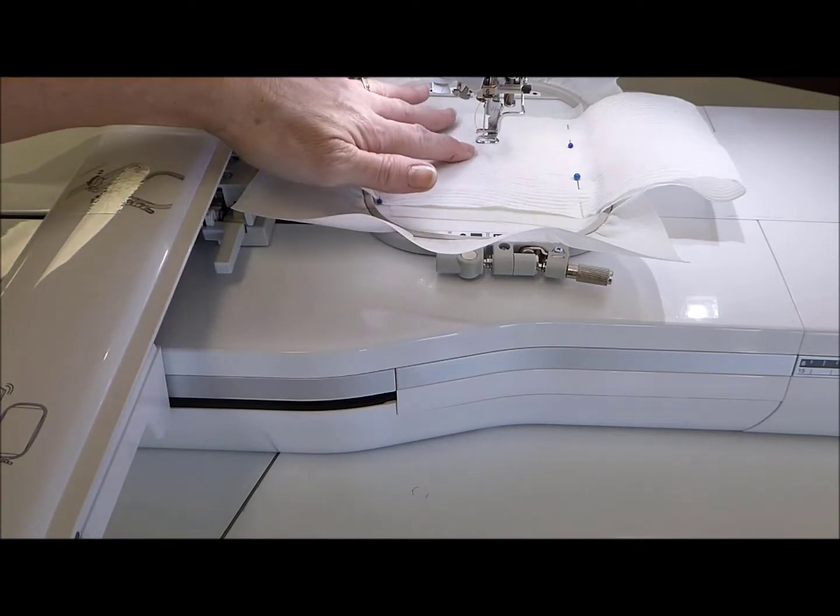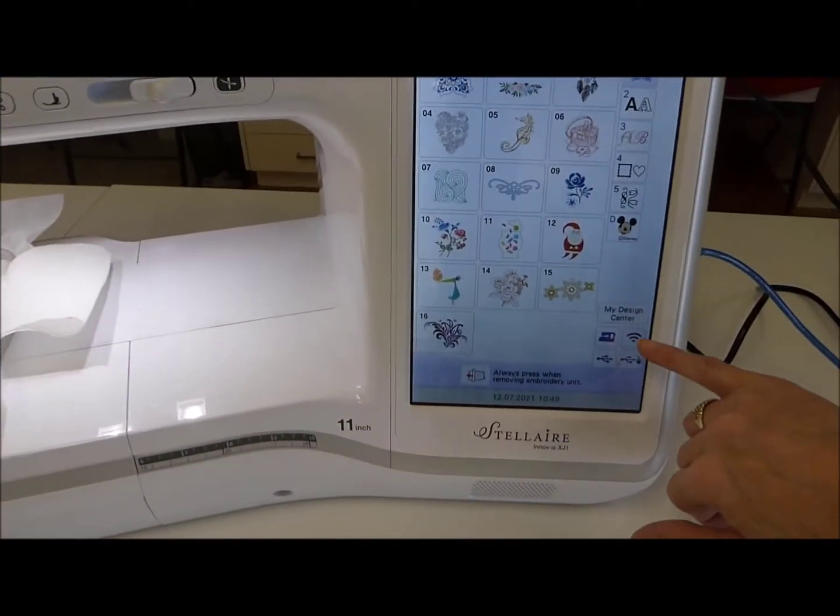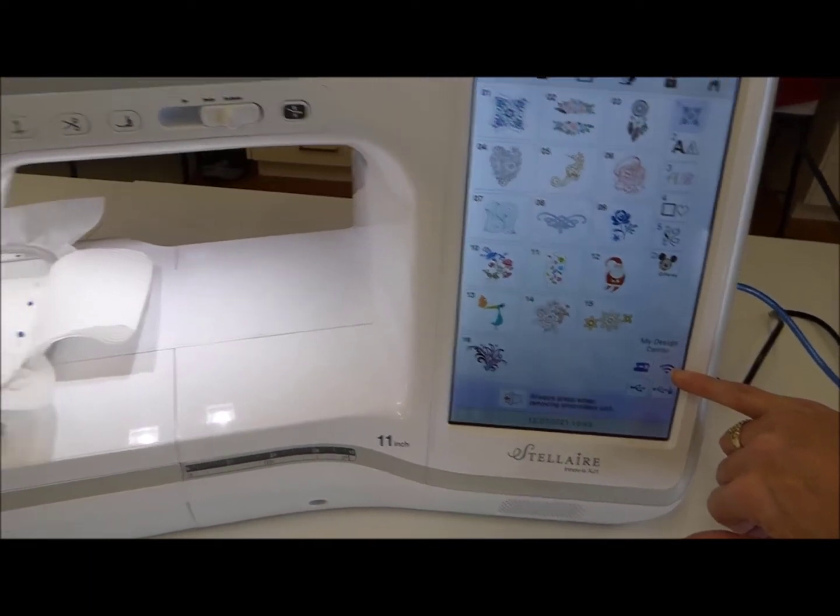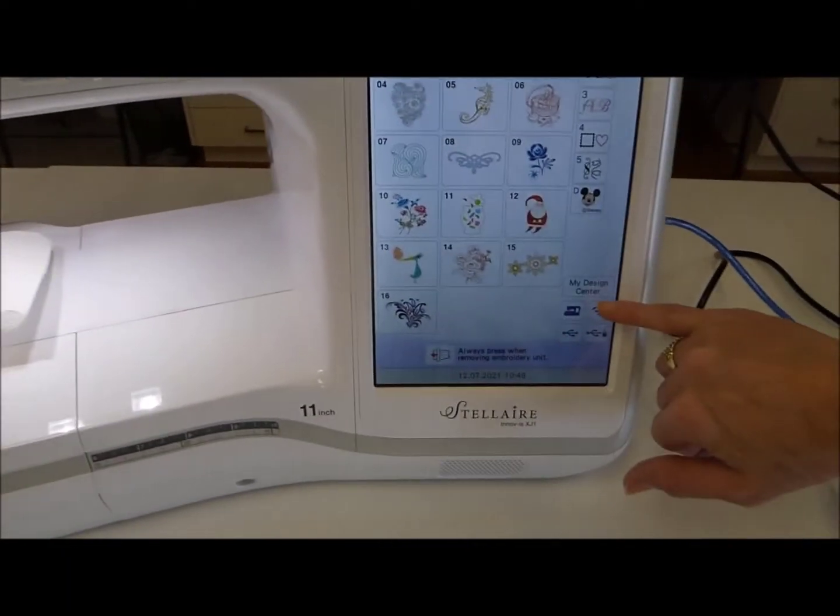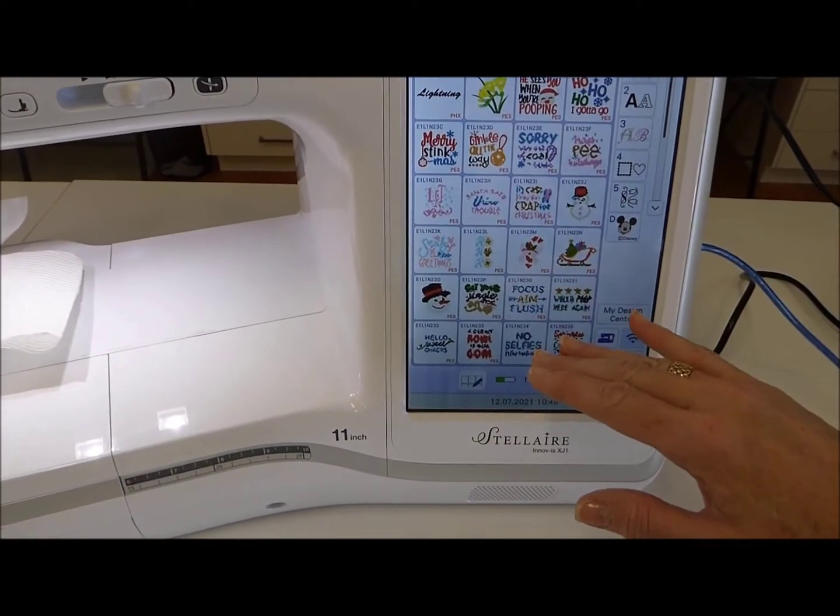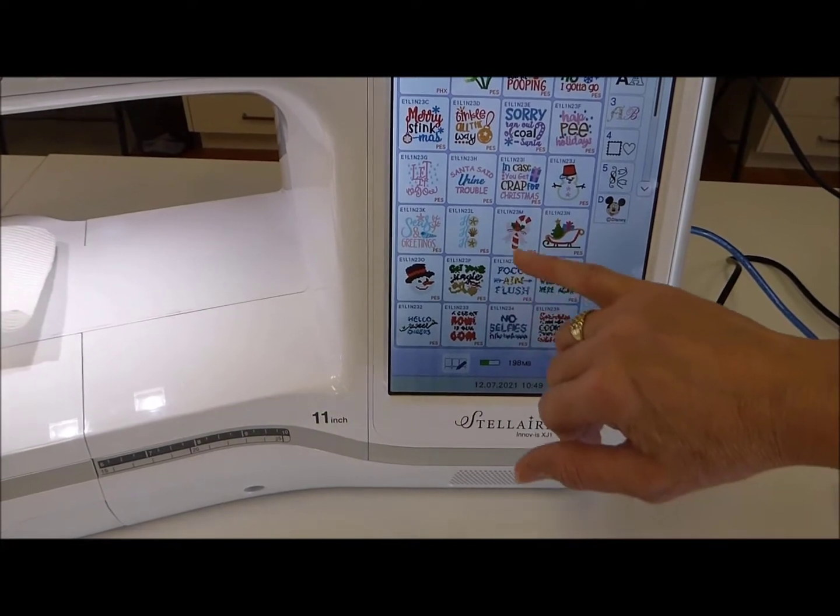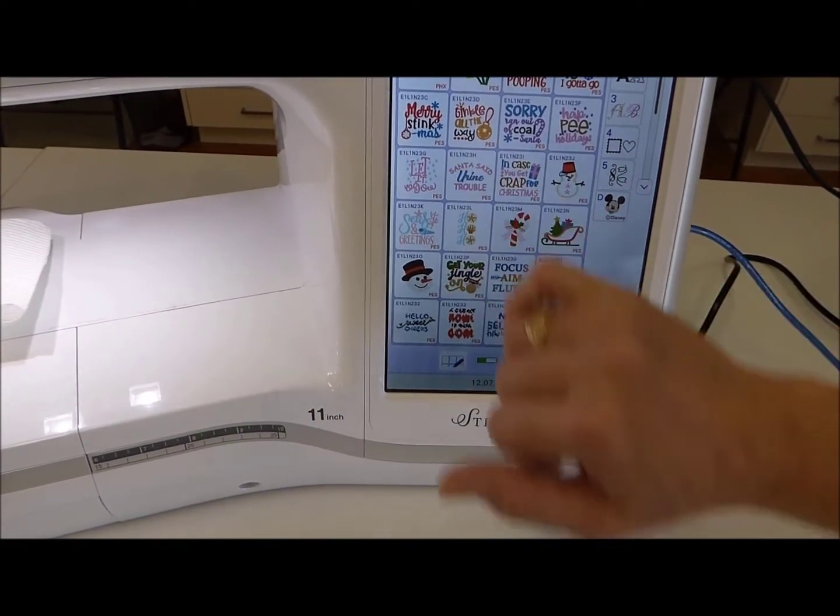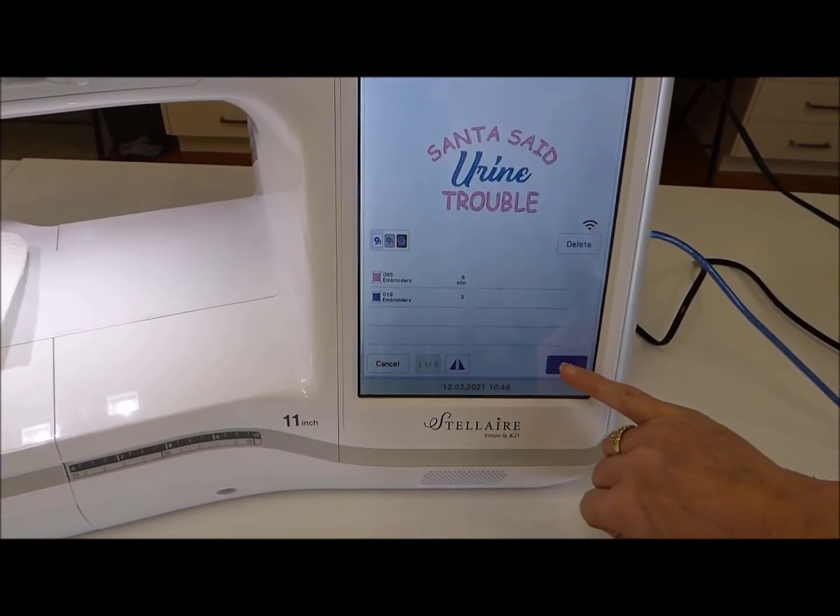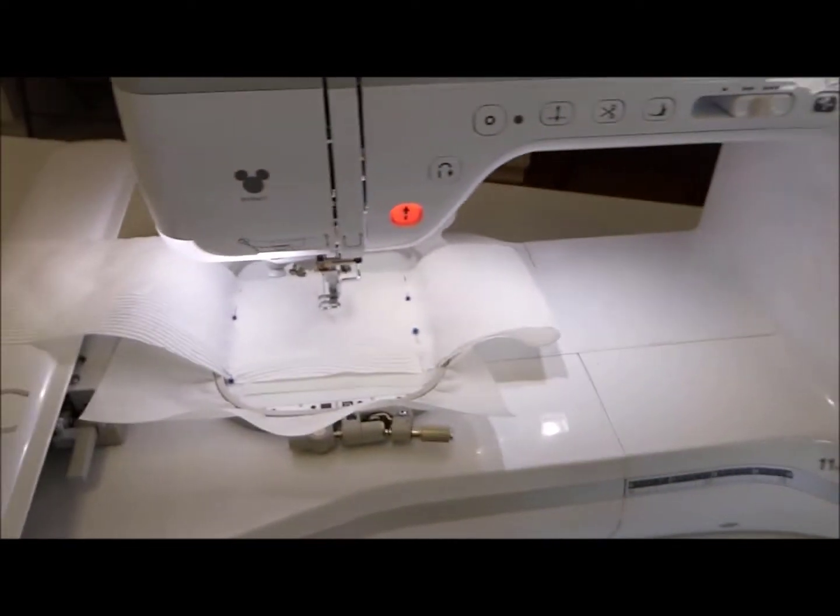Now we simply center our design and embroider. We've saved our designs through the Wi-Fi system on this Brother Stellaire, so we simply go to our Wi-Fi, it brings up all our designs that we wish to choose from, and we simply choose a design and sew it out. Choose, set, test that it's in the correct spot, and then sew.